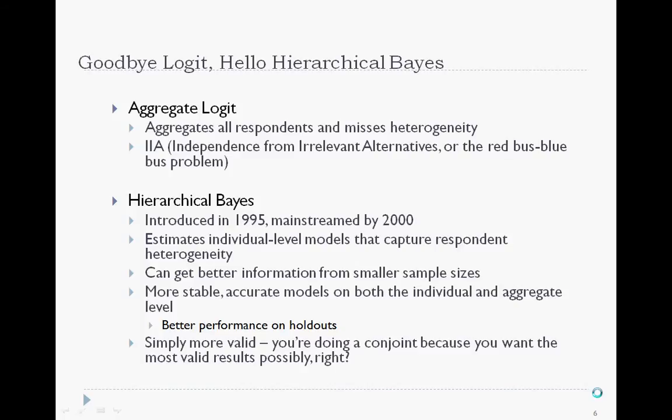We need to stop for a moment and talk some stats. Today, some basic choice-based conjoint data is still being analyzed using aggregate logit, so you should understand some basics about it. Aggregate logit was an early algorithm used to analyze choice-based conjoint data, and now there are better methods. Logit has the problem that it aggregates all respondents together and ignores potentially useful individual respondent differences. For example, if you had two brands of smartphones — Apple and Motorola — and half the sample likes Apple and the other half likes Motorola, aggregate logit will tell you that brand is not important.